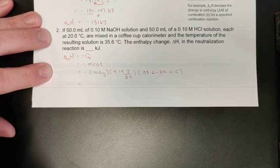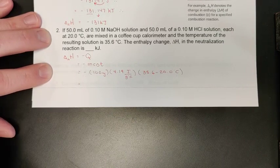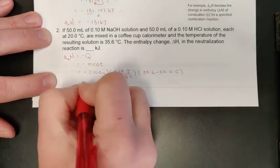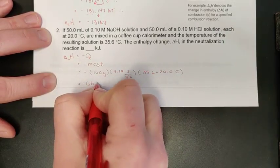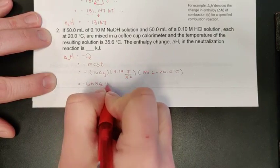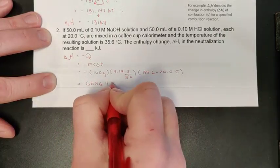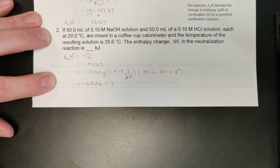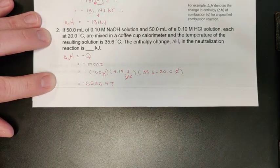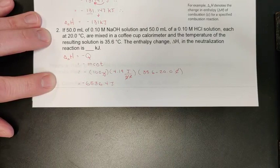Run that through your calculator. We have 15.6 for a temperature change times 4.19 times 100, and we end up with 6,536.4. That would be joules of energy lost by this neutralization reaction.